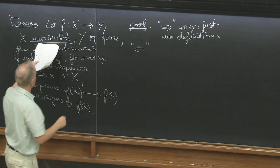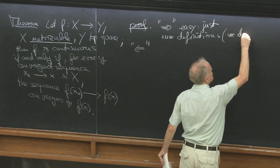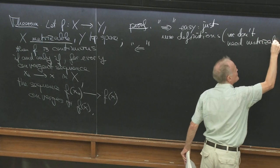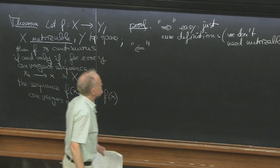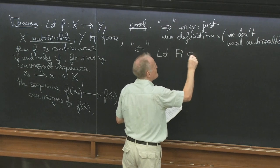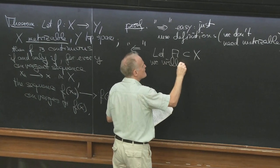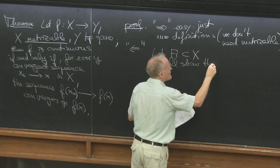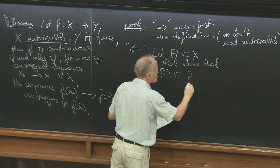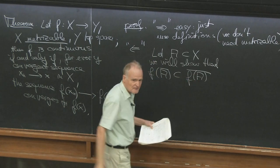For the other direction, we don't need metrizable — with definitions, metrizable is not needed here. So let A be a subset of X. What we will prove is that f of the closure of A is contained in the closure of f(A). This means: if a point is close to A, then the image point is close to f(A). That's continuity.